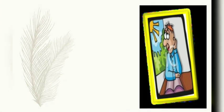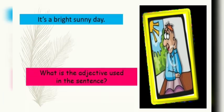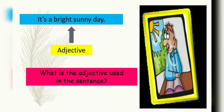What do you observe here? It's a bright sunny day. What is the adjective used in the sentence? Can you identify? Now 'bright sunny' — these two words are describing about the day, the kind of day we mentioned here. So 'bright sunny' is the adjective used in the sentence.